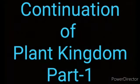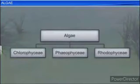Algae are divided into three main classes: Chlorophyceae, Phaeophyceae, and Rhodophyceae.